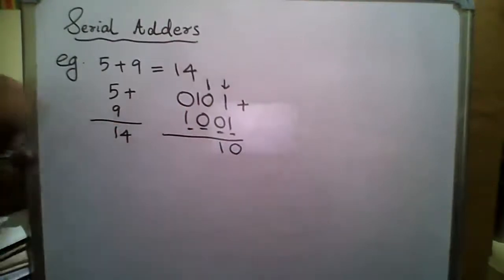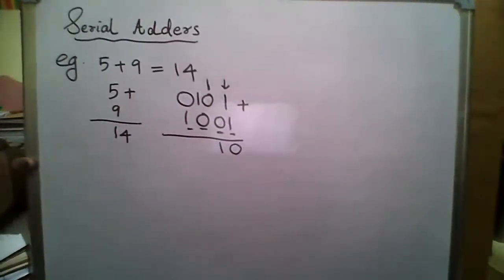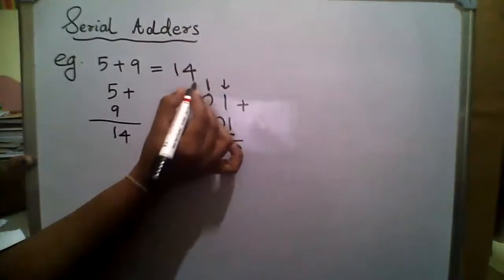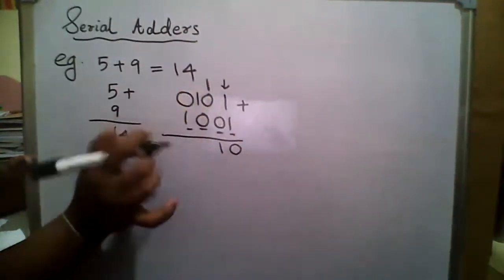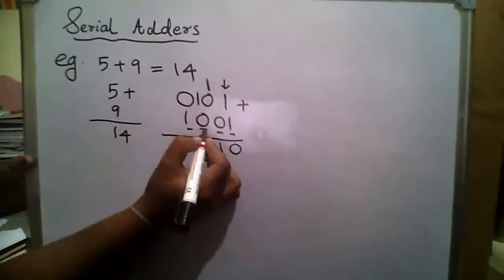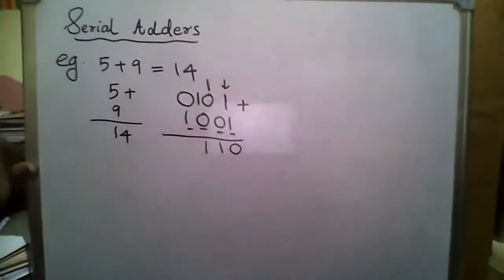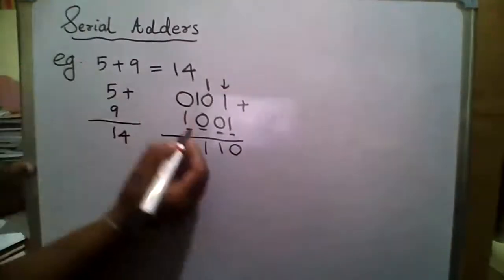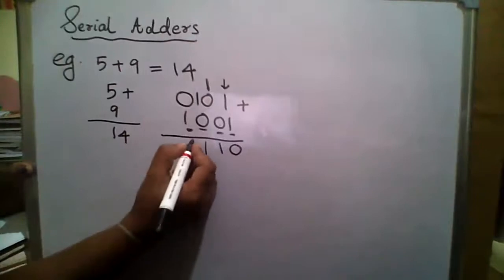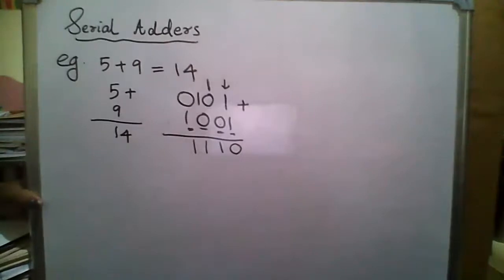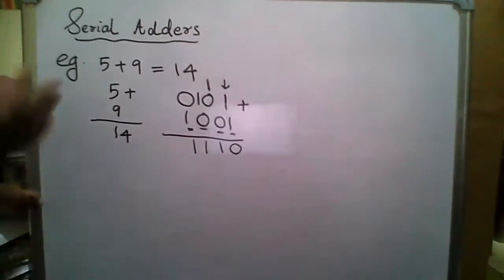I will add 1 from the previous carry, doing a carry over. I will add 1 plus 0. What is 1 plus 0? 1 plus 0 gives sum equal to 1. Next, what is 0 plus 1? 0 plus 1 gives result equal to 1. So the result is 1, 1, 1, 0.